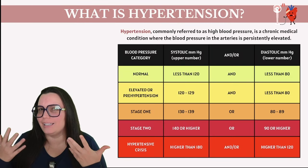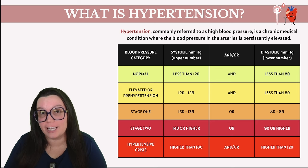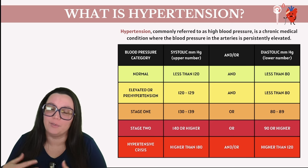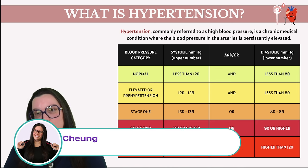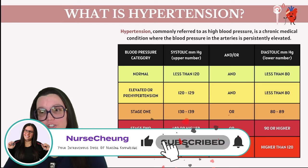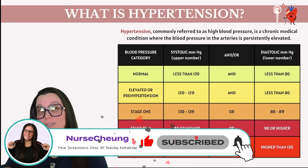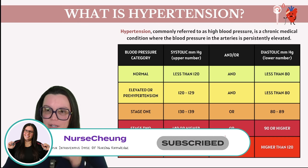So what exactly is hypertension? Hypertension is commonly referred to as high blood pressure, and it's a chronic medical condition where the blood pressure in the arteries is persistently elevated.